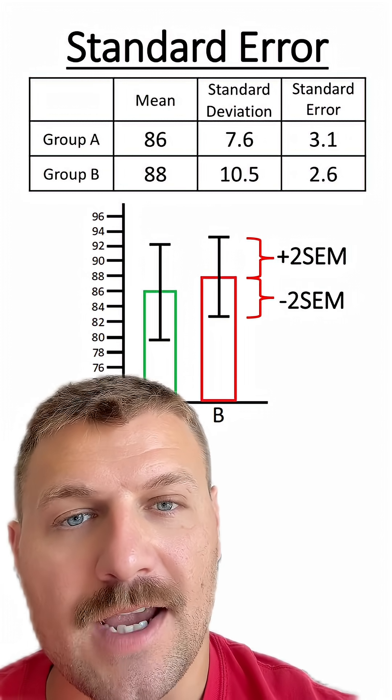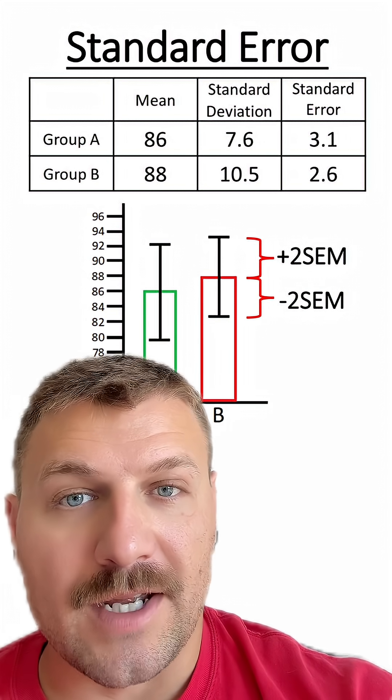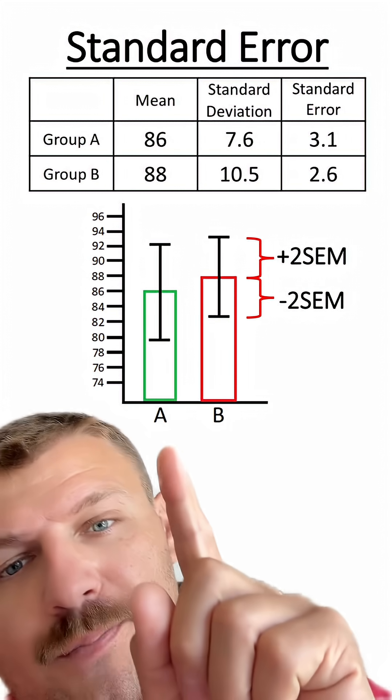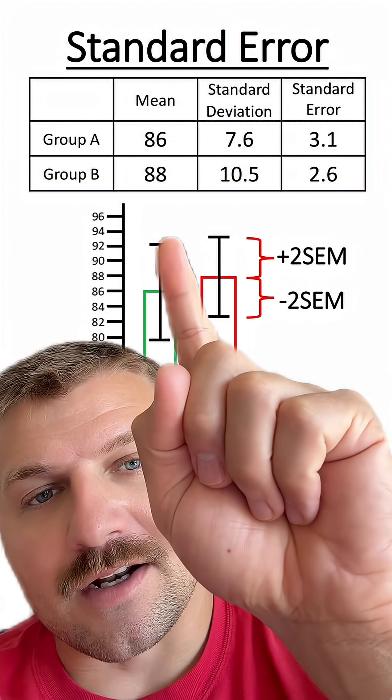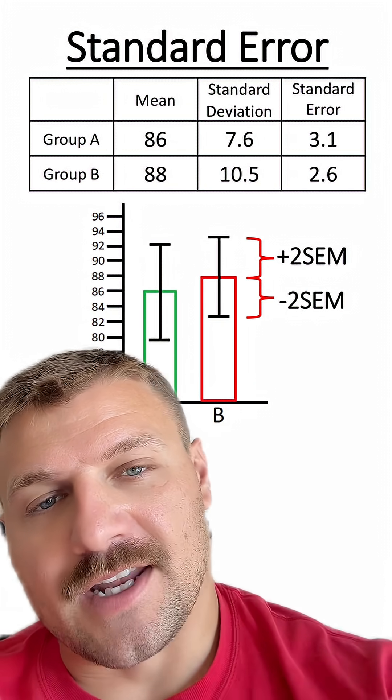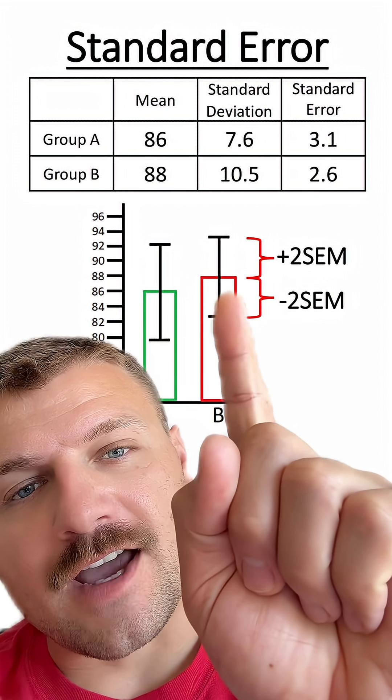We have to place error bars, or these bar-headed lines, on each graph using the standard error of the mean. For Group A, we use a standard error of 6.2 since we're going up two standard errors in both the positive and negative direction. We do the same thing for Group B's data, which is 5.2.